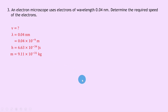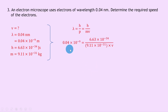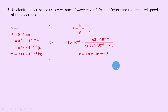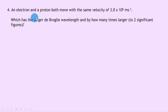Writing down the equation: lambda equals h over p equals h over mv. Substituting gives 0.04 times 10 to the minus 9 equals 6.63 times 10 to the minus 34 divided by 9.11 times 10 to the minus 31 times v. Cross-multiplying to rearrange for v gives v equals 6.63 times 10 to the minus 34 divided by 9.11 times 10 to the minus 31 times 0.04 times 10 to the minus 9, which gives v equals 1.8 times 10 to the 7 meters per second.